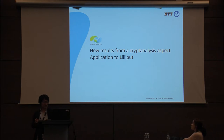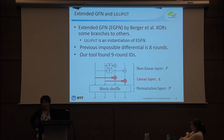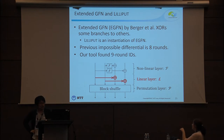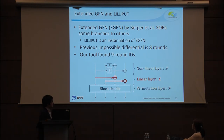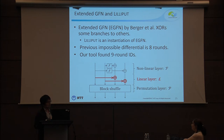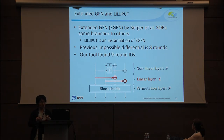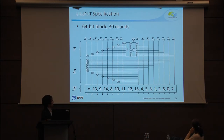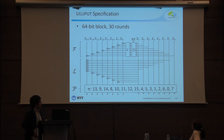Next, I explain Liripat. Liripat is an extended generalized Feistel network proposed by Berger et al. at SAC. This network is an extension of the generalized Feistel network. The normal generalized Feistel network has a nonlinear layer followed by a permutation layer, but the extended version adds a linear layer between the nonlinear layer and the permutation layer. The previous impossible differential was 8 rounds, but we found a 9-round one. Liripat has a 64-bit block length, 30 rounds, and every branch has 4 bits.